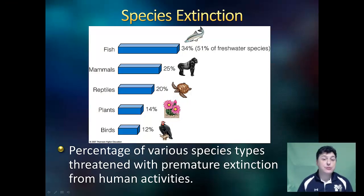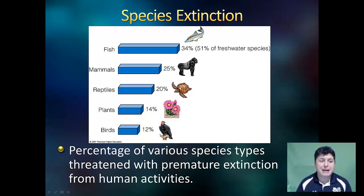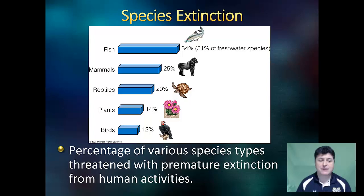Certain species types are at greater risk than others. There are over 34% of the world's fish species and 51% of freshwater species at risk for premature extinction. 25% of all mammals, 20% of reptiles, 14% of plants, and 12% of birds are threatened with premature extinction from human activities.